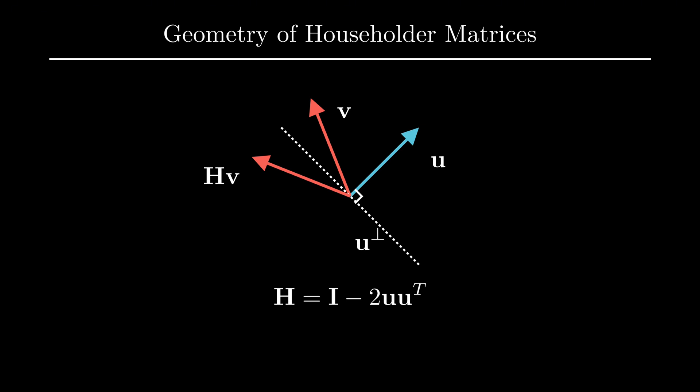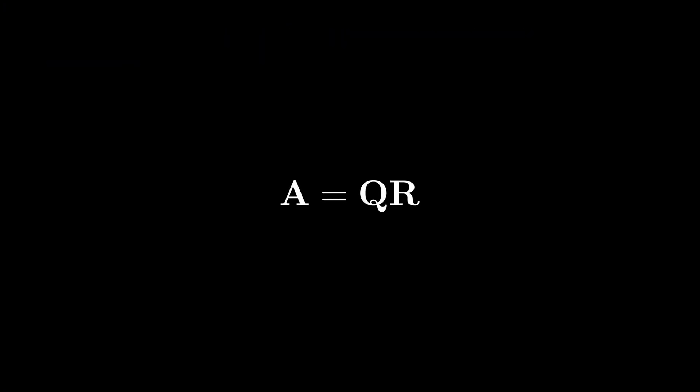Now there's one final thing we must discuss before we're ready to do the QR factorization with these matrices. We will see that in the next video, instead of using the Gram-Schmidt process to make a set of orthonormal vectors to form our Q matrix, we will form our Q matrix by multiplying a string of Householder matrices.